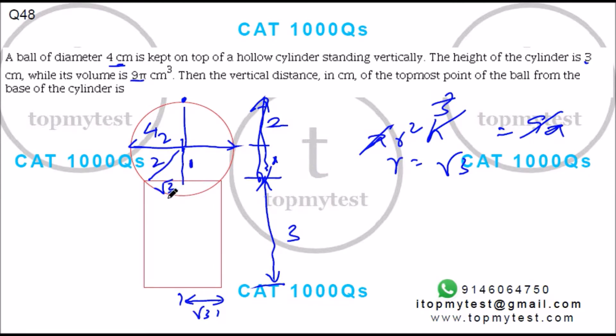So job done. 1² plus (√3)² gives you 2² which is 4. So the total height will be 3 plus 1 is 4, 4 plus 2 is 6. 6 is your answer.